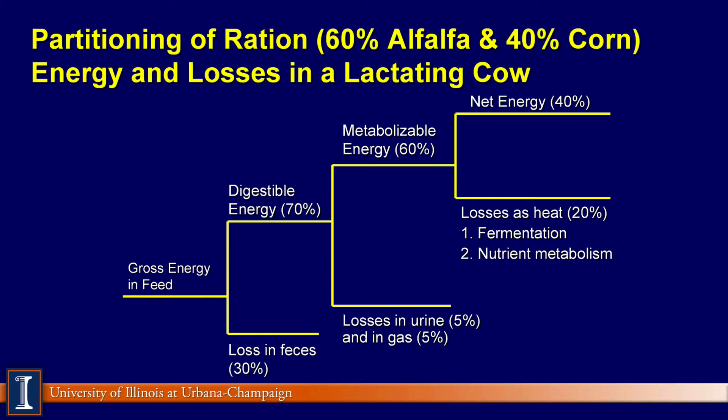What are the losses going from metabolizable to net energy? That is the rumen — basically the fermentation losses, the heat generated, rumen microbial growth, those kinds of factors. That's why in pig diets it doesn't become a factor, because pigs don't have rumens.